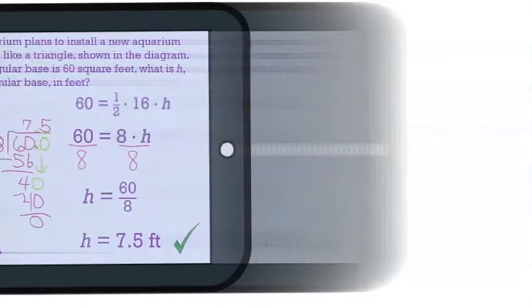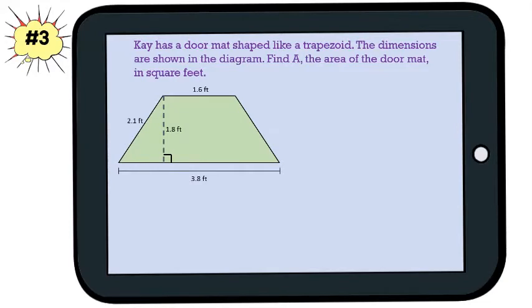Let's try a problem involving a trapezoid. K has a doormat shaped like a trapezoid. The dimensions are shown in the diagram. Find A, the area of the doormat, in square feet. First, we need to write down our formula.